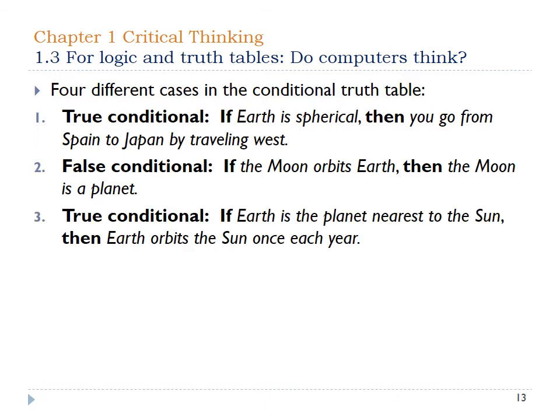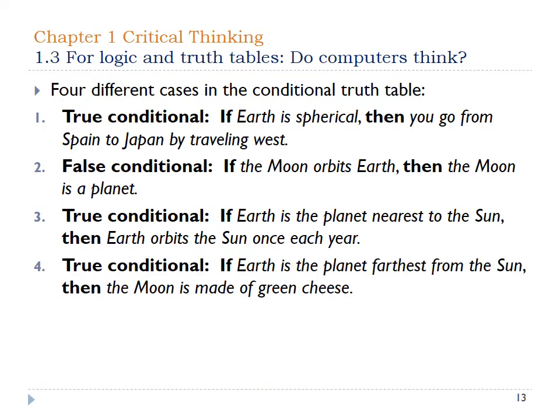If the Earth is the planet nearest to the Sun, then the Earth orbits the Sun once each year. In this case, the conditional is true even though the premise is false. The conclusion is true — the Earth does orbit the Sun once each year — but the Earth is not the planet nearest to the Sun. The last one: if the Earth is the planet farthest from the Sun, then the Moon is made of green cheese. Everything seems false, but because the premise is false, it doesn't matter what else is said — the statement is actually true.